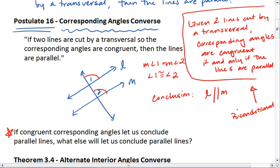Meaning we need to get it so that we can show corresponding angles congruent. If we can show corresponding angles congruent, then we can conclude parallel lines.